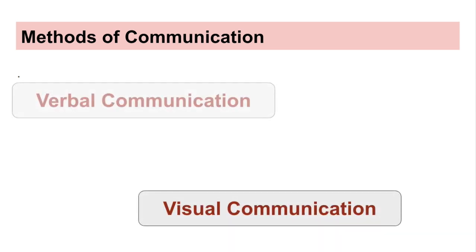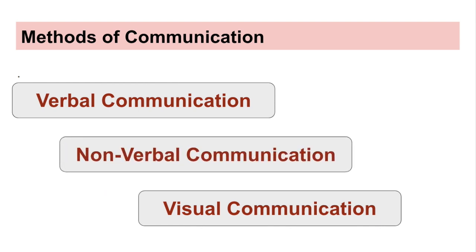Now we are starting with the next topic: the methods of communication. We have studied the definition of communication; now how many modes do we have to communicate with a person? There are three methods: visual communication, verbal communication, and non-verbal communication.